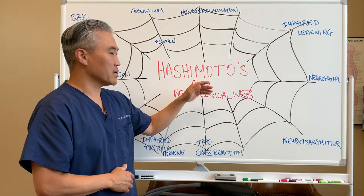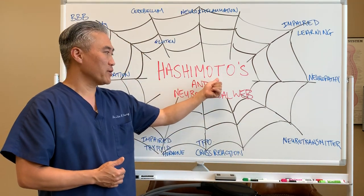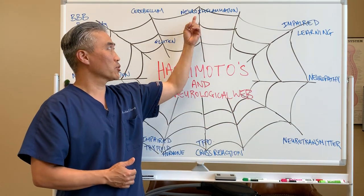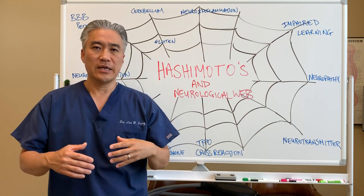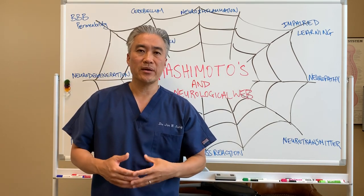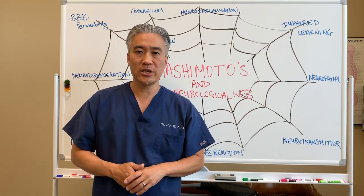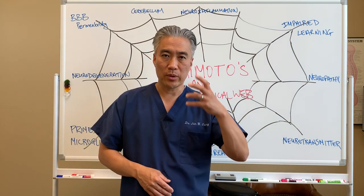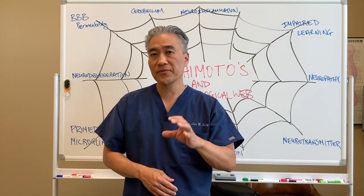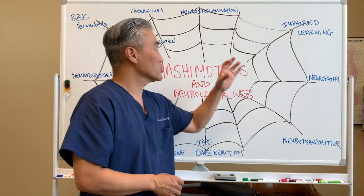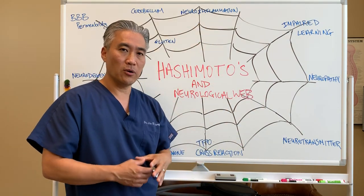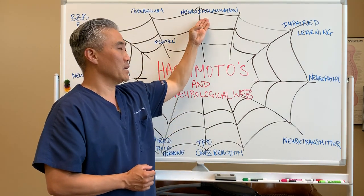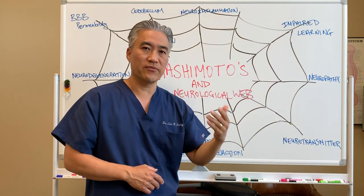If we look at this diagram behind me, Hashimoto's thyroiditis will impact the neurological web by, one, affecting neuroinflammation. It can create inflammation that can be systemic and eventually lead to brain inflammation. There is a condition called Hashimoto's encephalopathy where the brain can actually get inflammation and create havoc. Inflammation is a big problem in autoimmune disease, but in the case of Hashimoto's thyroiditis, it can directly impact the brain through the inflammatory process.